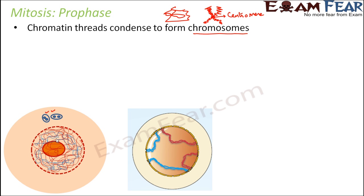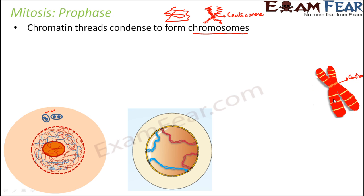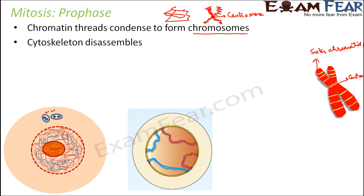You can see the thread-like structures gradually getting arranged and becoming compact, finally forming a chromosome. The central part where the two chromosomes are connected to each other is known as the centromere. Each of these individual chromosomes is known as a sister chromatid — terminology we will be using very often.